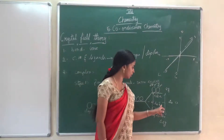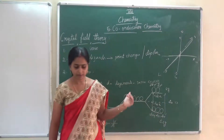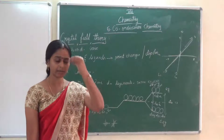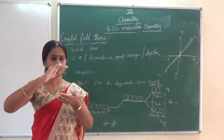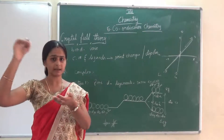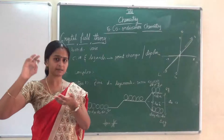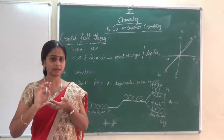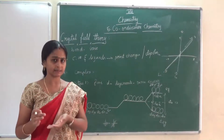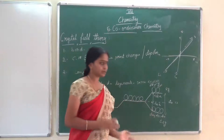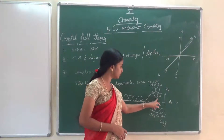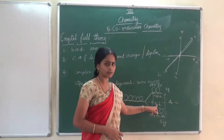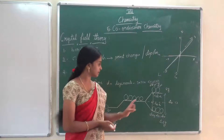The e_g orbitals face more repulsion because the ligands approach along the axis. The t2g orbitals lie between the axes and face less repulsion. To maintain average energy, splitting occurs: +3/5 Δo and −2/5 Δo. Remember: Δo is the overall crystal field splitting energy for octahedral complex — the difference between the two orbital set energies. If given Δo, you can easily find the octahedral crystal field splitting energy.